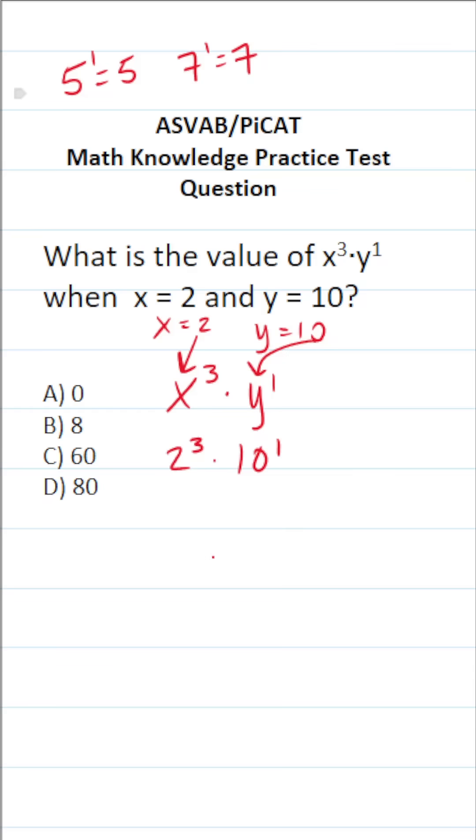Likewise, I also quickly want to mention this: anything raised to the zero power is 1. So 5 to the zero power is 1, 7 to the zero power is 1.